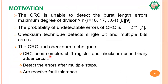Motivation: The CRC is unable to detect burst length errors beyond the maximum degree of devices. The probability of undetectable error of CRC is 1 minus 2 to the power of negative R. The checksum technique detects single bit and multiple bit errors. CRC uses a complex shift register while checksum uses binary addition. Checksum detects errors after multiple steps and is a reactive fault tolerance technique.